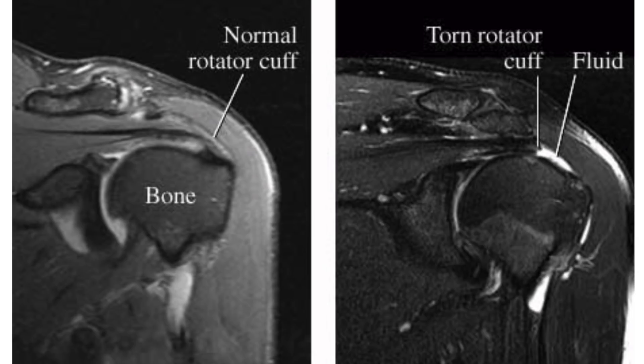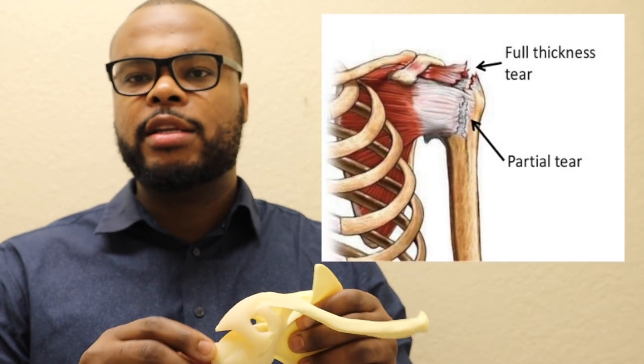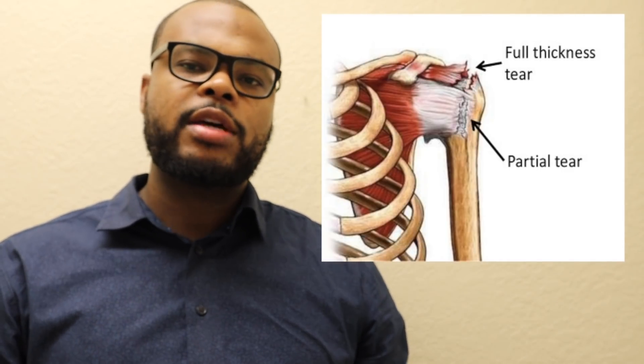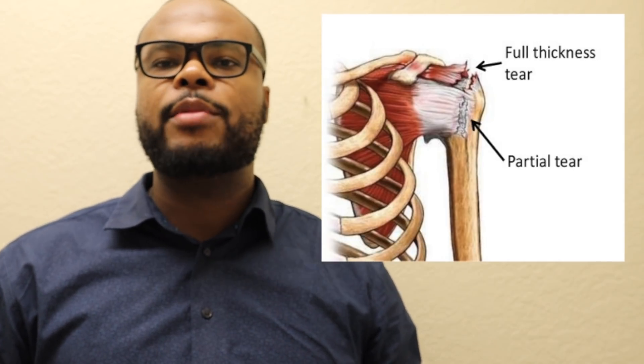If it's a partial thickness tear — meaning it's just a small tear that didn't go all the way through the rotator cuff — sometimes we can treat that with physical therapy, anti-inflammatories, and corticosteroid injections. But there's a small chance these partial thickness tears can progress to a full thickness tear, which means it goes all the way through the entire tendon. When that happens, surgery is usually recommended. That's what Paul George just had — a partial thickness tear, and it's probably best for him to get it fixed since he's very physically active.